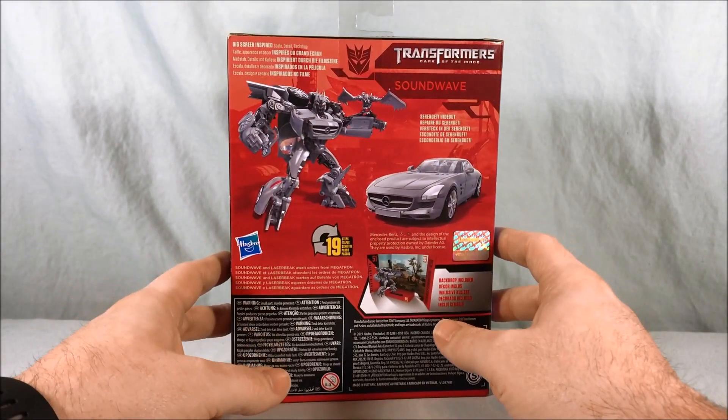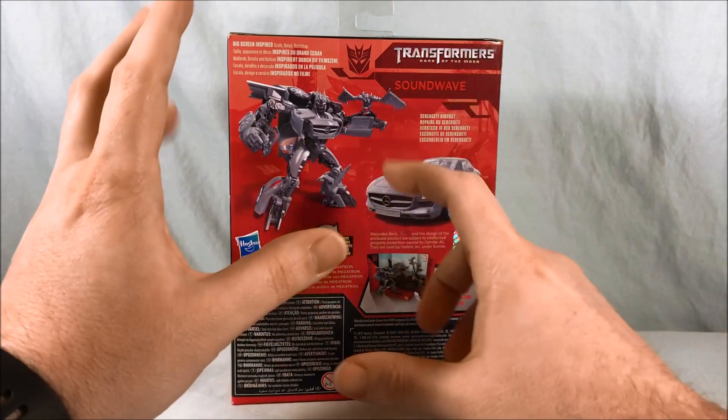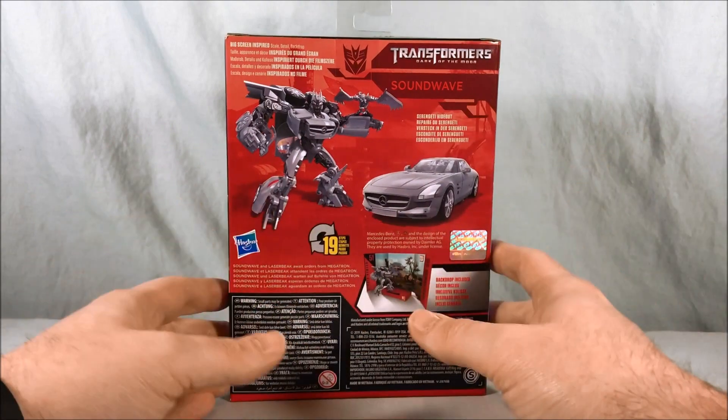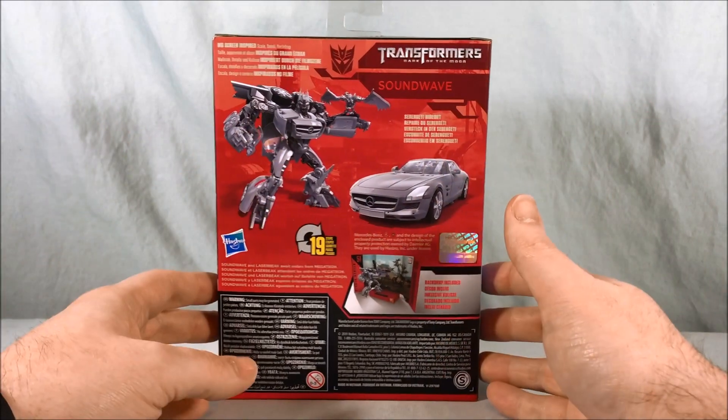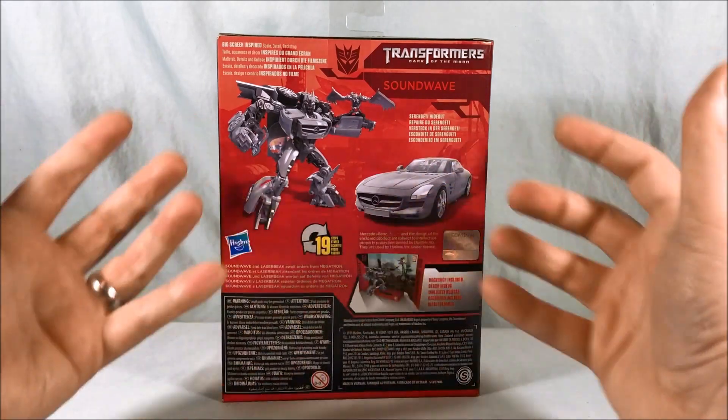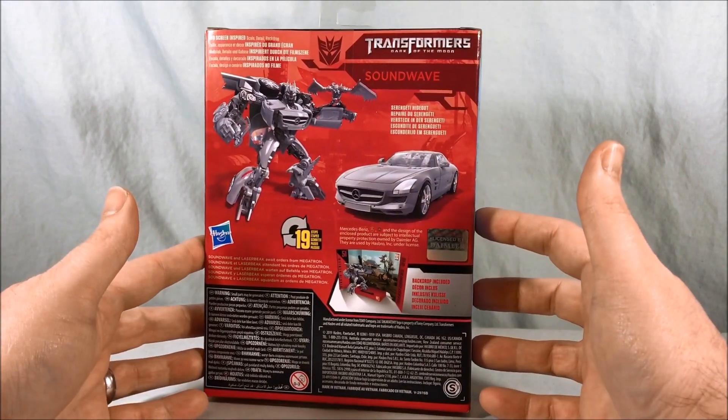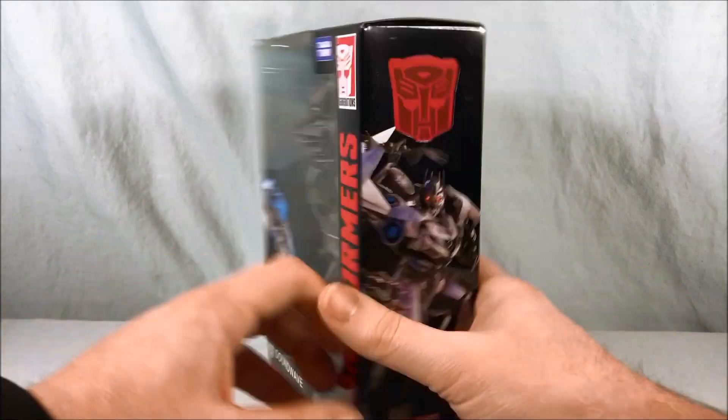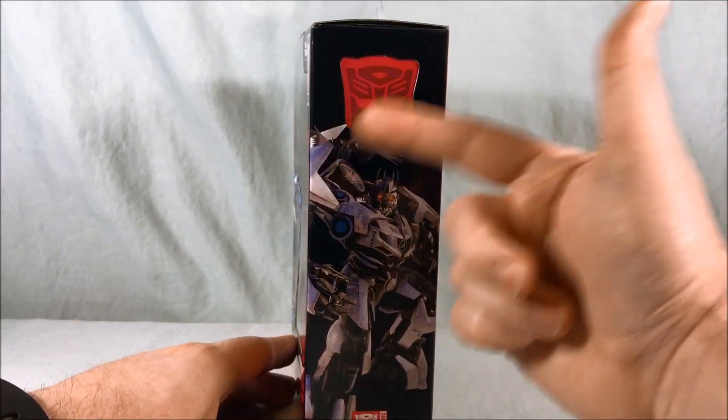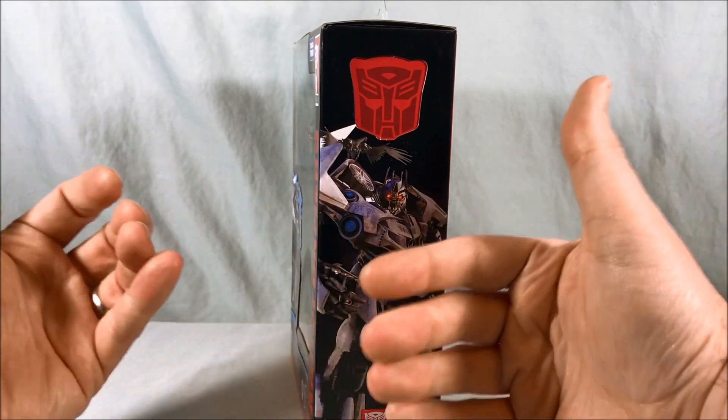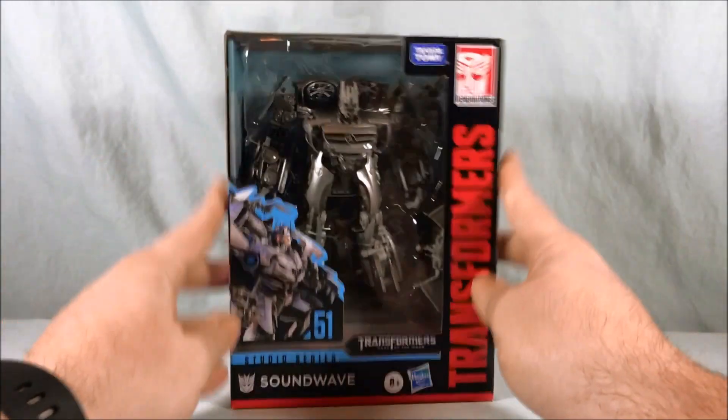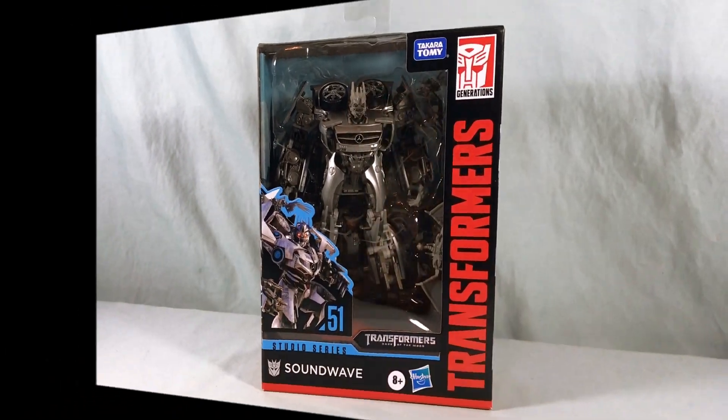I always liked this version of Soundwave. In the second movie he was that weird satellite thing and I just didn't think that worked. They are doing a figure for the satellite coming out later this year but I always thought making him a car was a better idea. I mean ideally he would be some kind of stereo but I understand that doesn't really make sense anymore. Packaging's pretty standard. I don't know why the Decepticons all still have the Autobot symbol but the Constructicons can get their own symbol. That's going to do it for the box. Let's go ahead and get him out and take a closer look.